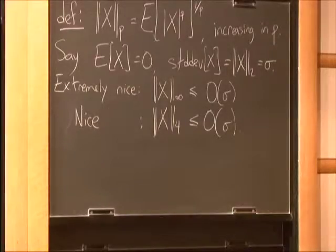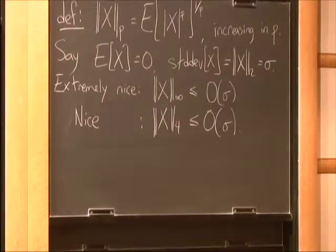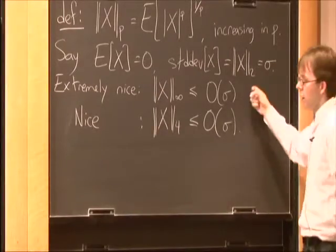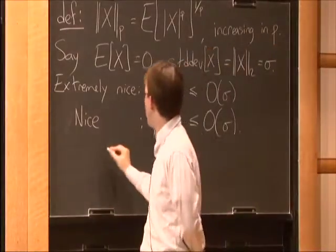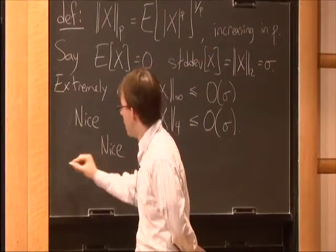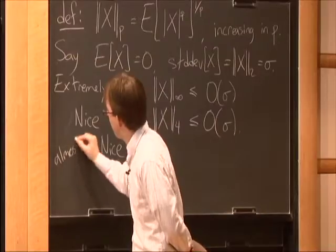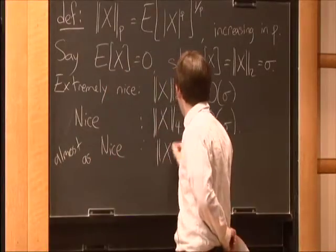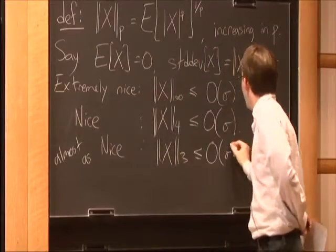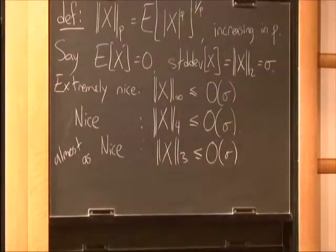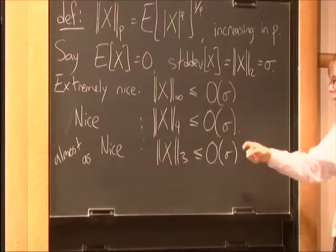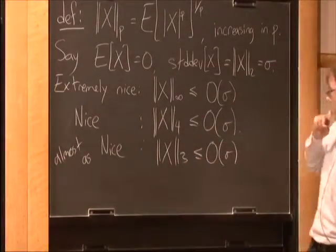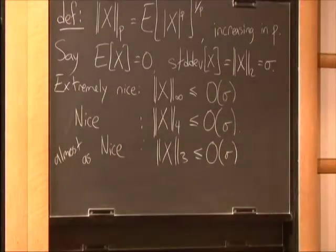A better condition: a random variable is pretty nice if its fourth norm is not much bigger than its standard deviation. These both scale the same way if you multiply by a constant. Even slightly weaker: if its three-norm is bounded with respect to sigma. It's very rare for a random variable to have a bounded three-norm but unbounded fourth norm, so these conditions are nearly equivalent in practice.